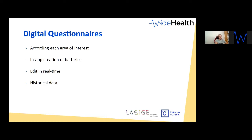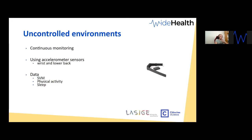Moving from paper to a digital approach also gives clinicians better comparison between different evaluations. They can now access differences across the past ten evaluations and the current state without manually searching through paper questionnaires from previous sessions. Regarding uncontrolled environments, we support continuous monitoring using an accelerometer sensor on the wrist and lower back.